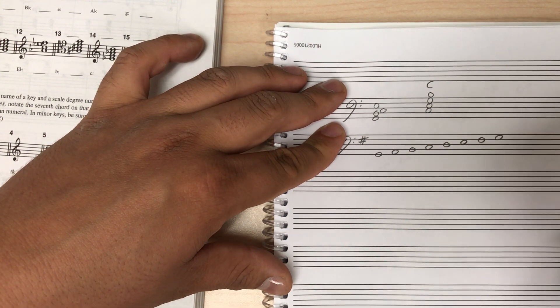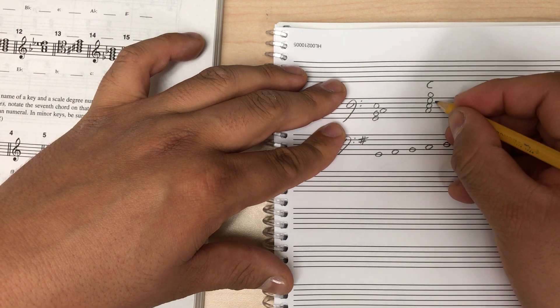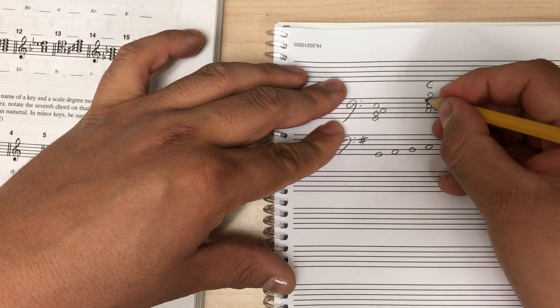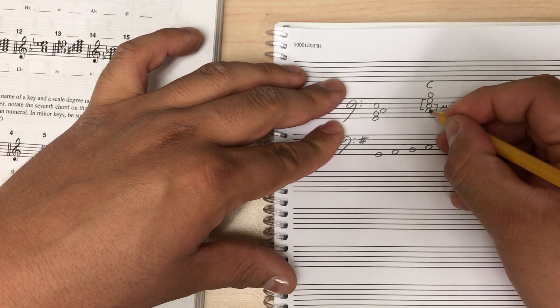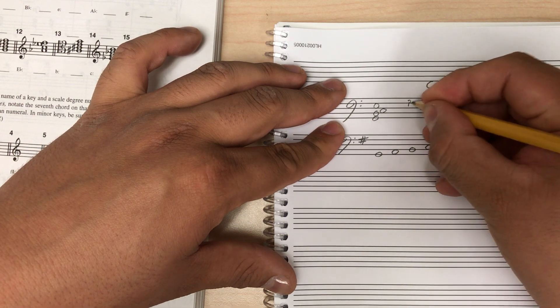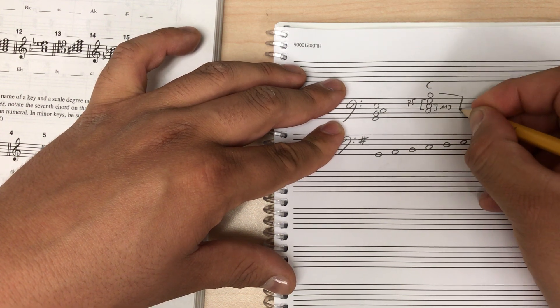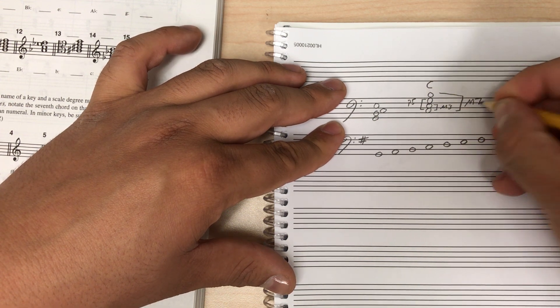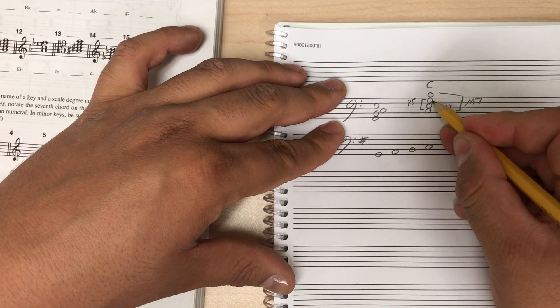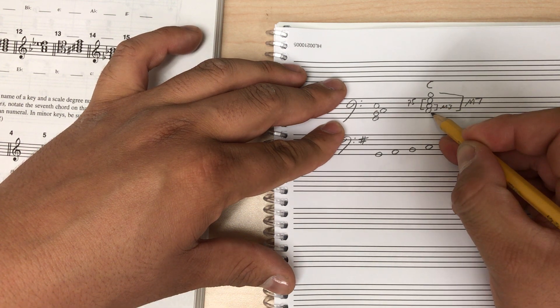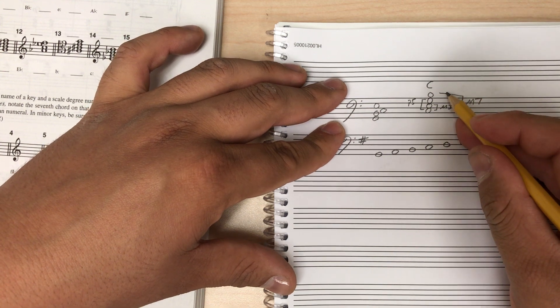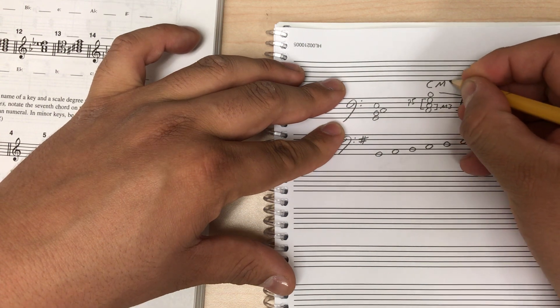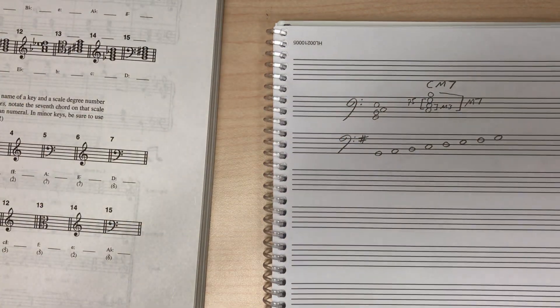Now I gotta figure out what the quality of this chord is, so we'll figure out what kind of triad we have. C to E is a major third, C to G is a perfect fifth, and then finally, C to B is a major seventh. So major third, perfect fifth, that tells me this is a major seventh chord. So this is a C major seventh.